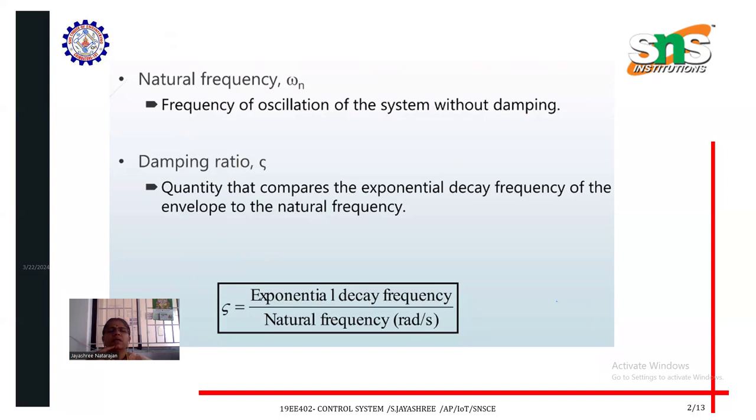What is damping ratio? A quantity that compares the exponential decay frequency of the envelope to the natural frequency. That is zeta. That is ratio of exponential decay in frequency to the natural frequency in radians per second. Thanks for watching. We will continue in the next class.